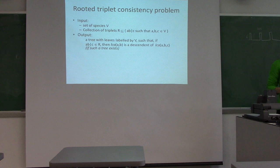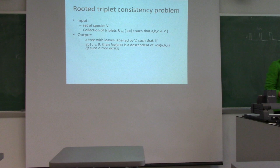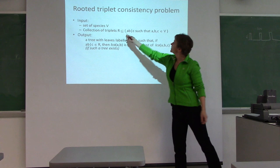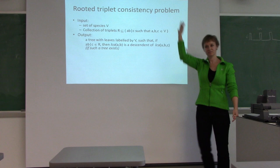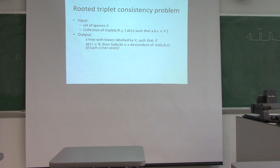We call this the rooted triplet consistency problem. The input is a set of species V and a collection of triplets R, written as AB|C, meaning A and B are closer to each other than C. For example, the first example can be written as 1,2|3; 1,3|4; and 2,3|4. The second is 1,2|3; 1,3|4; and 4,1|2.